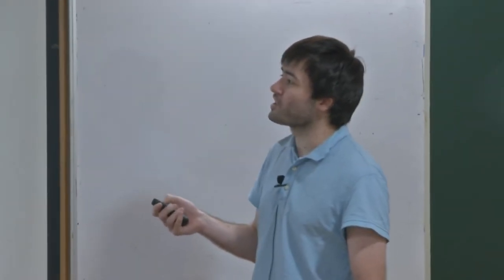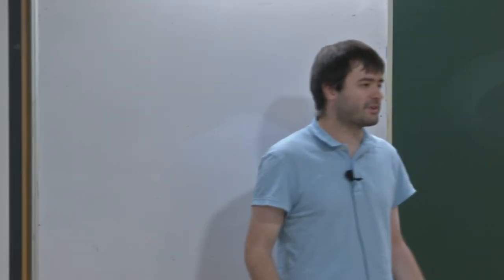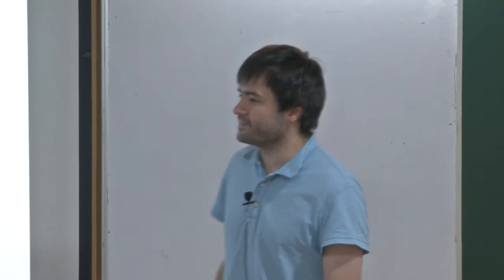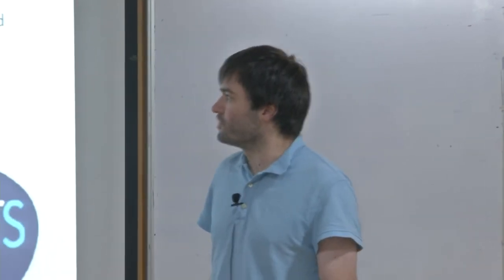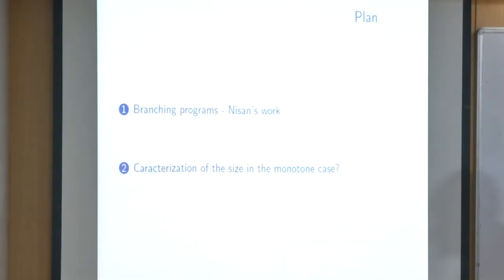I will talk about a relation between algebraic branching programs and rank measures in the non-commutative world, particularly in the case of monotone when we don't allow negations. The plan: an introduction to what a branching program is, what was done by Nisan before, and can we get a characterization also in the monotone case.